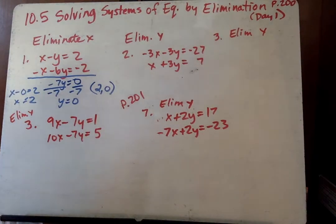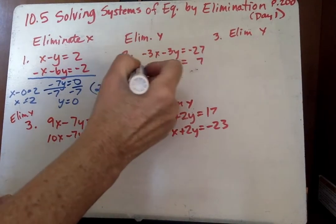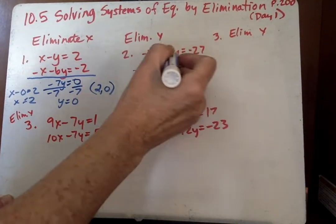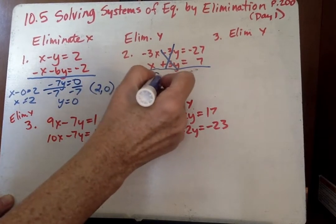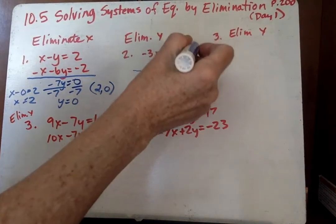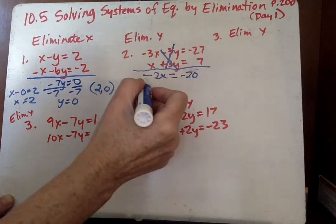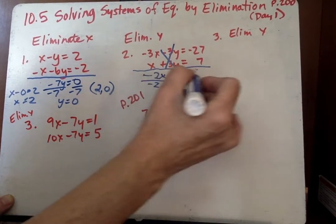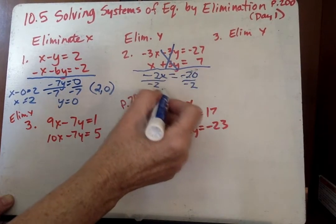Okay, let's go on to number 2. And we see we already have opposites here. So this is fabulous. We can cross those out. Negative 3x plus x is negative 2x, and negative 27 plus 7 is negative 20. Divide by negative 2, divide by negative 2, and we get x equals 10.